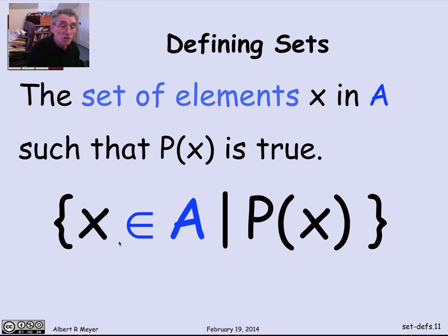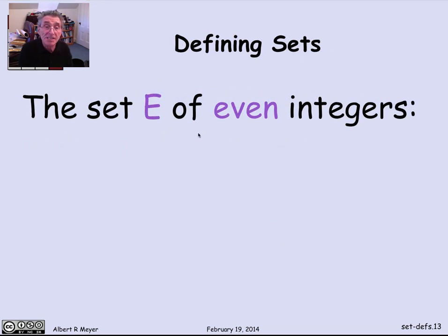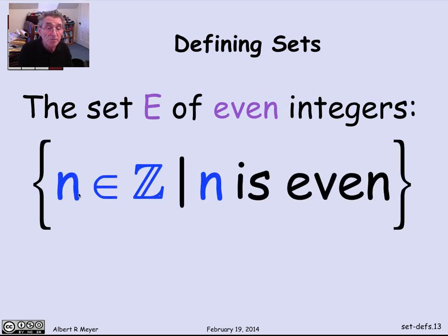And that's the notation we use. So this would be read as the set of x in A such that P of x holds, that x has property P. So notice this vertical bar is read as such that. It's just a mathematical abbreviation. And this is those elements in A that have property P, that P of x holds for. That defines a set of those elements. Let's look at a simple example. The set E of even integers is simply the set of numbers n that are integers such that n is even. So in this case, the property P of n means that n is even.